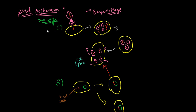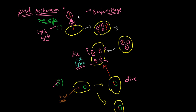Bacteriophages replicate by either a lytic cycle or a lysogenic cycle. The difference between the two cycles is that the cell dies at the end of the lytic cycle, while the cell remains alive in the lysogenic cycle. The most studied bacteriophage is the T-even bacteriophage, which is composed of a head and tail structure and contains a genome of double-stranded DNA.